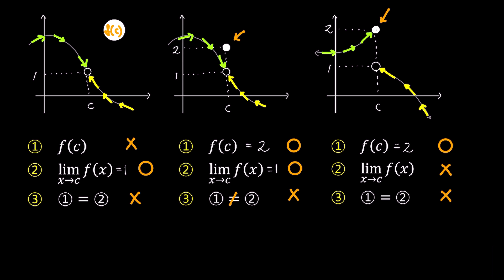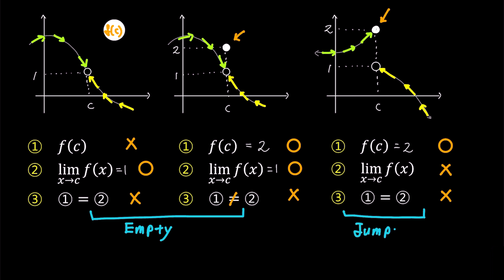In the case of the left two graphs, the limit exists but f is an empty point — this is referred to as a removable discontinuity. In other words, if we fill in the solid circle representing f(c), we can create a continuous function. However, in the case of the right graph — a jump discontinuity — even filling in the hole does not make the function continuous.